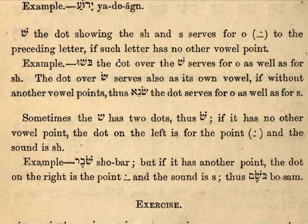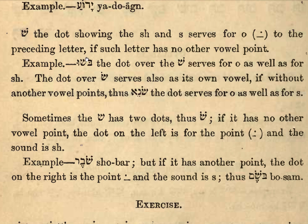If that letter doesn't have a vowel, for example here, we have a bet and a shin with no vowel underneath, so there has to be one — it's Bo-shu. This dot is telling us that it's Shin and it's also O at the same time. The dot over the Shin serves for O as well as for SH — it's doing two jobs. There's an invisible vav in between the bet and the shin, with the dot on top of it: Bo-shu.